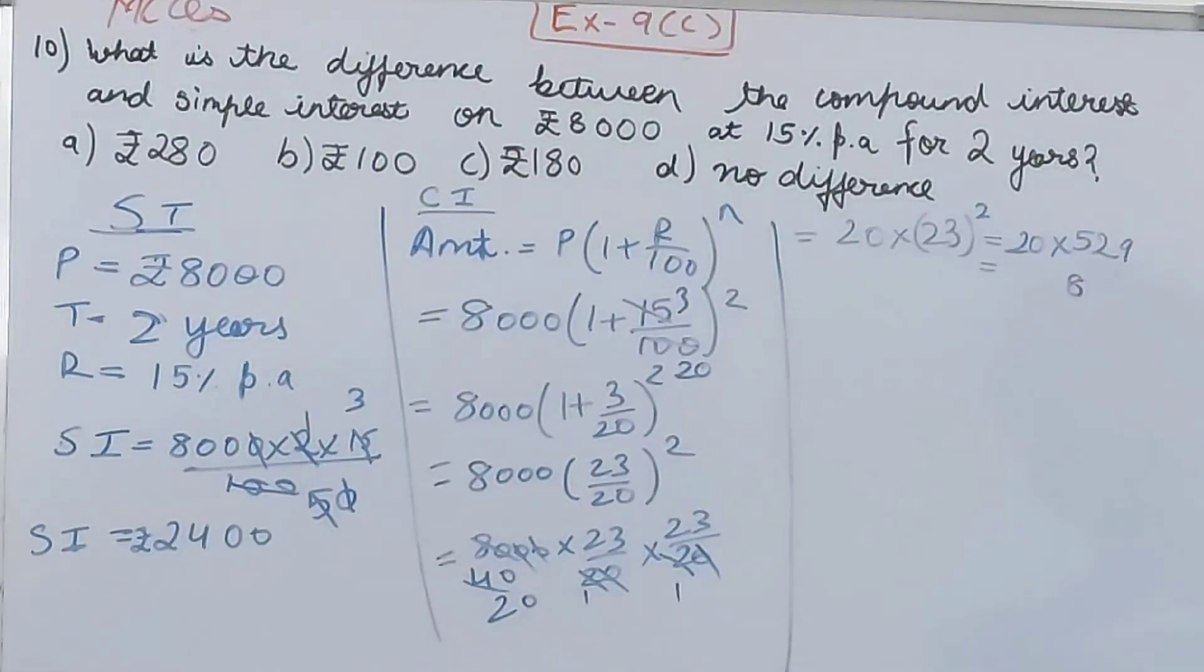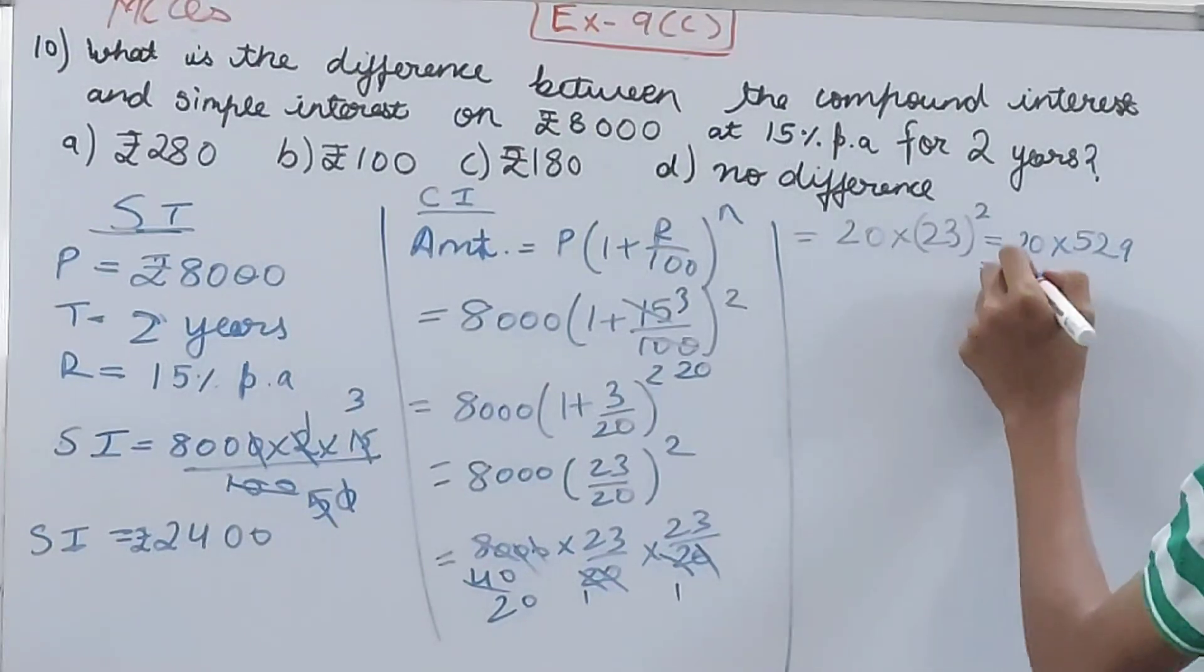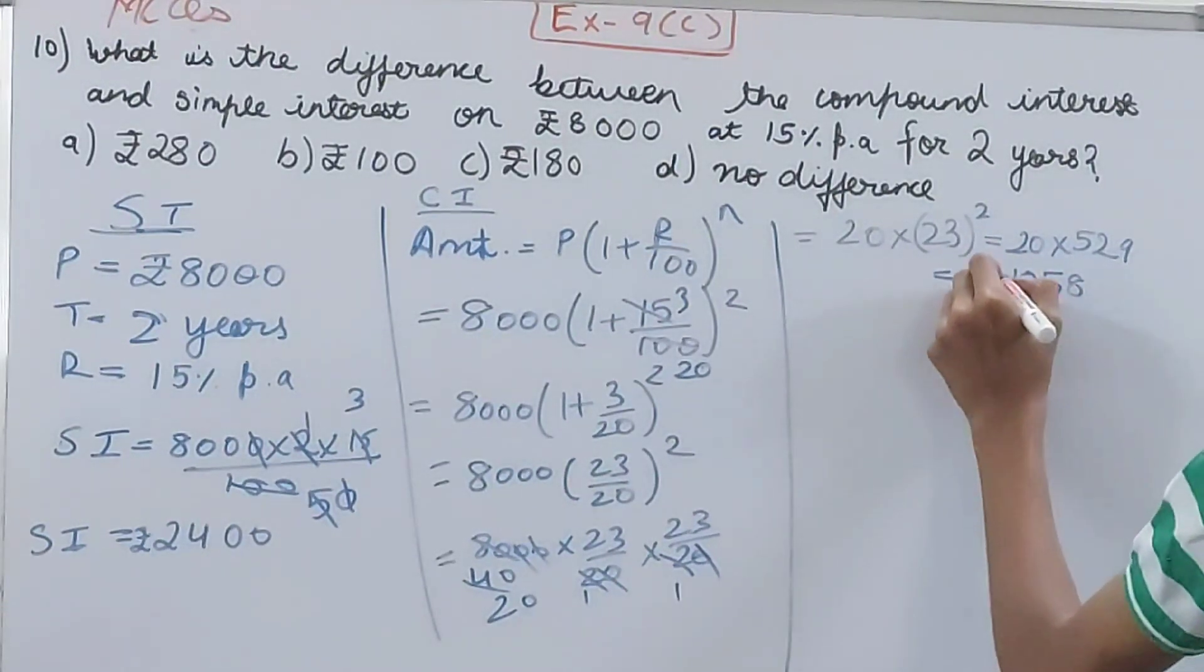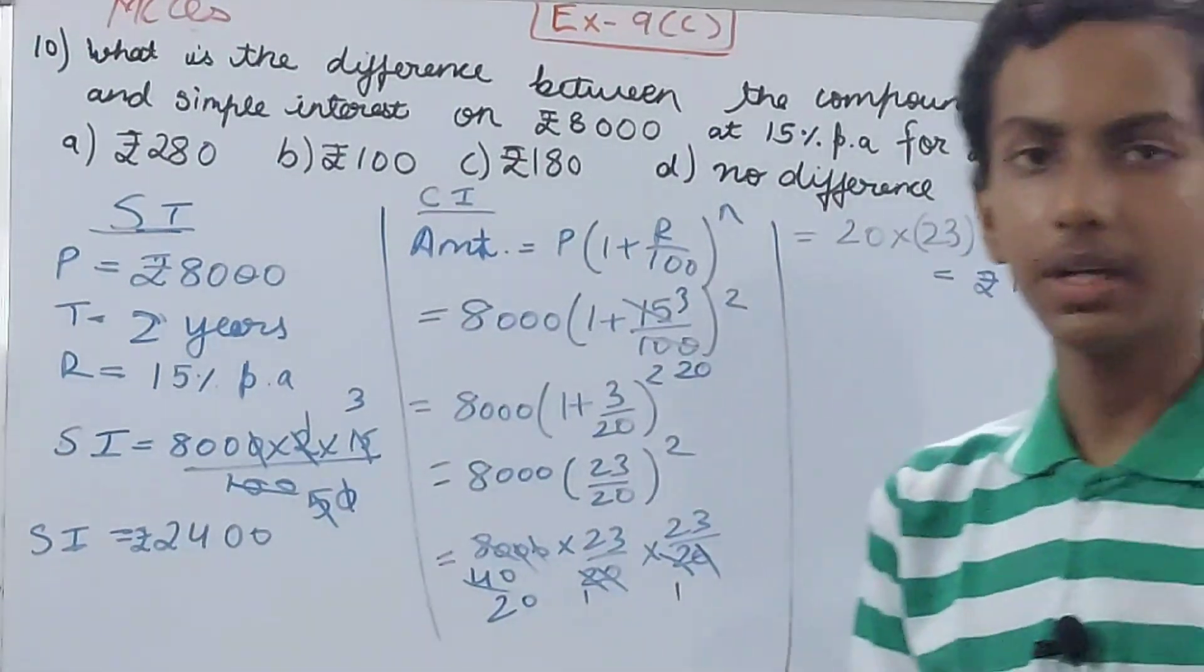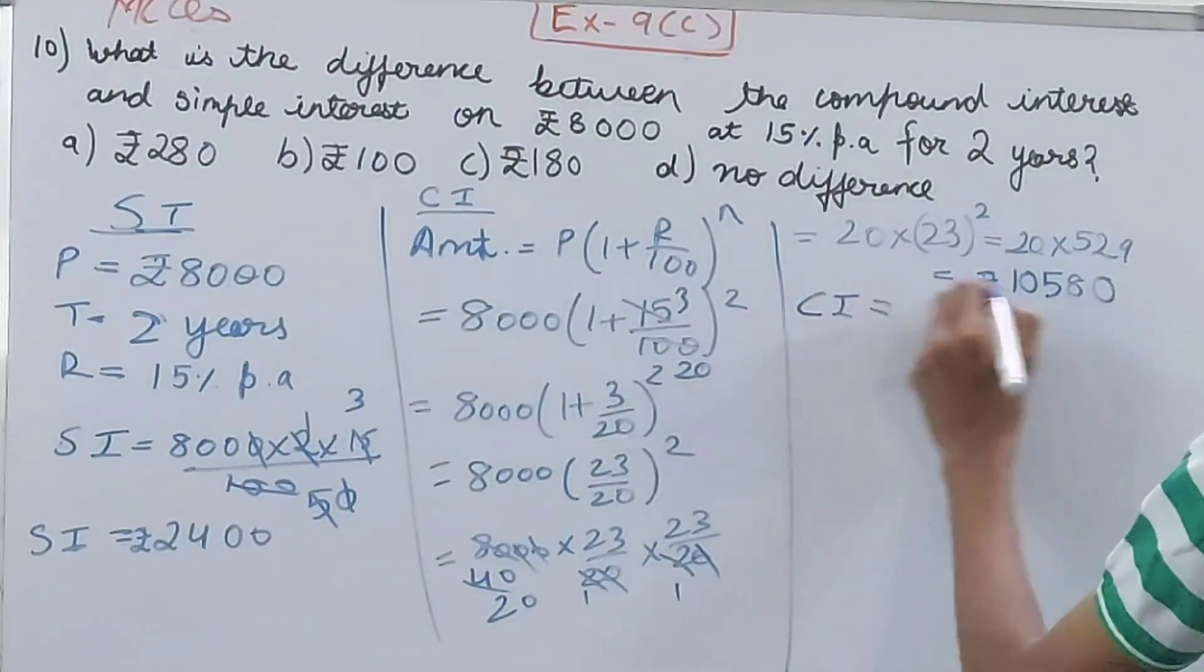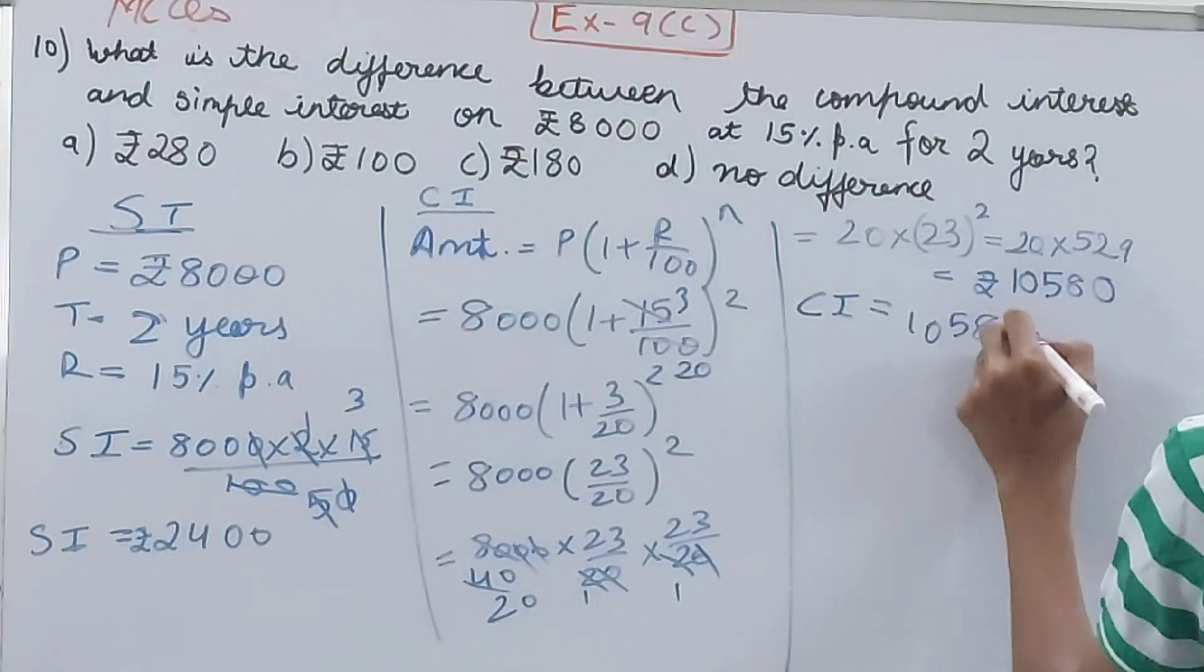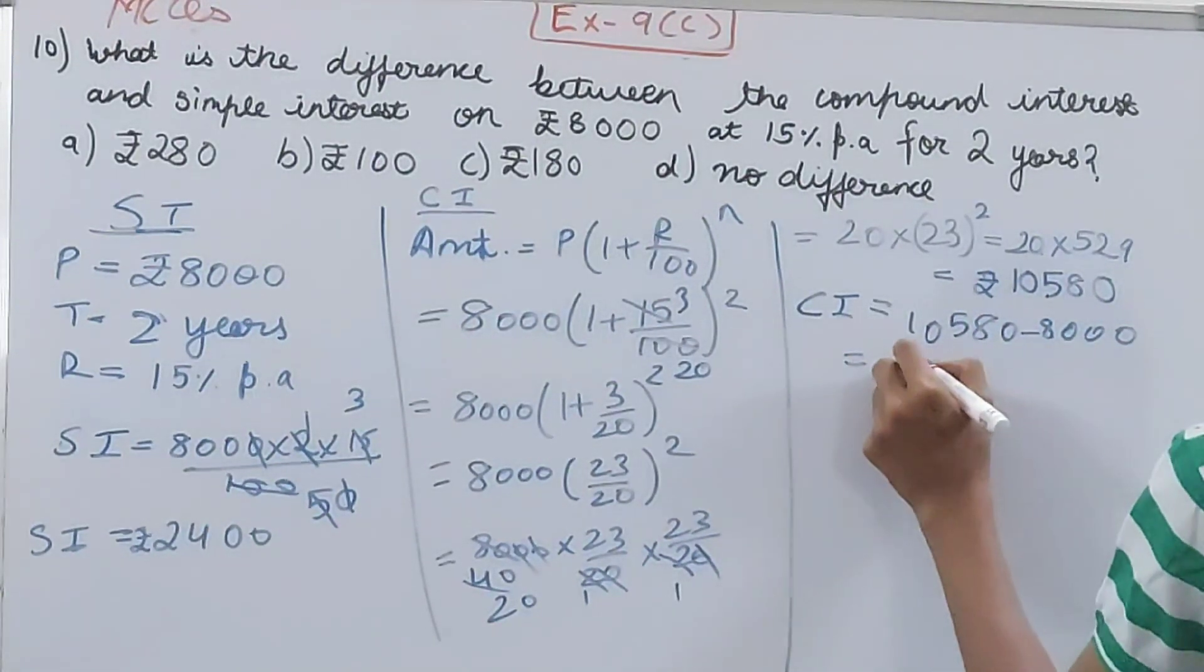2 into 9 is 18 and 1, 2 into 4 and 1, 5 and 5 into 2. 10,580 rupees is your amount. Now calculate the compound interest, which is your amount minus principle: 10,580 minus 8000. Your compound interest is 2,580.